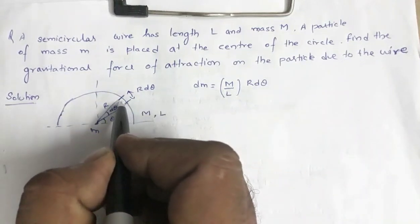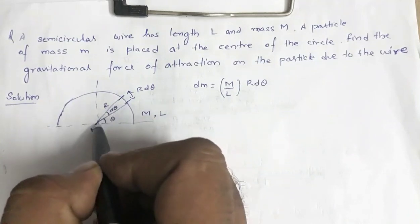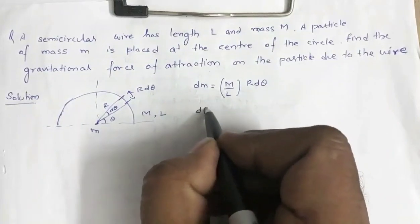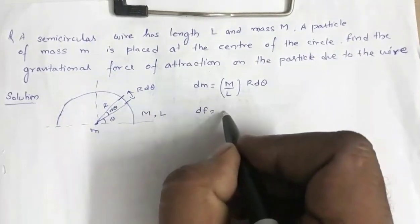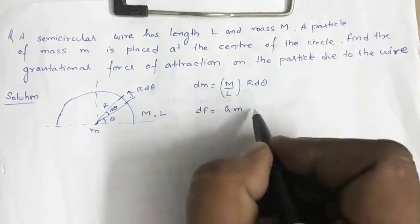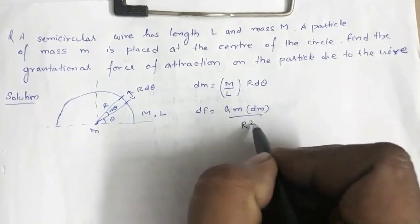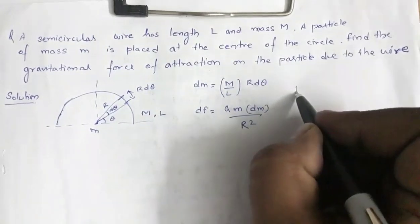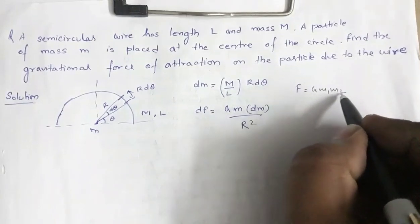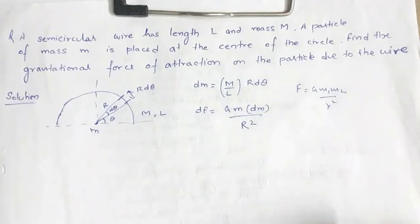The force of attraction between this small element and mass m is dF = G·M·dm / R², using Newton's law of gravitation: F = G·M₁·M₂ / R², which gives the force of attraction between two masses M₁ and M₂ separated by distance R.